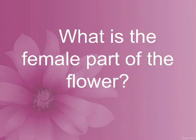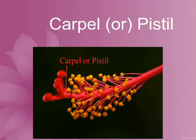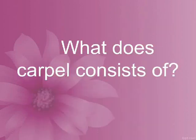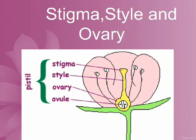What is the female part of the flower? Carpel, or pistil. What does carpel consist of? Stigma, style, and ovary.